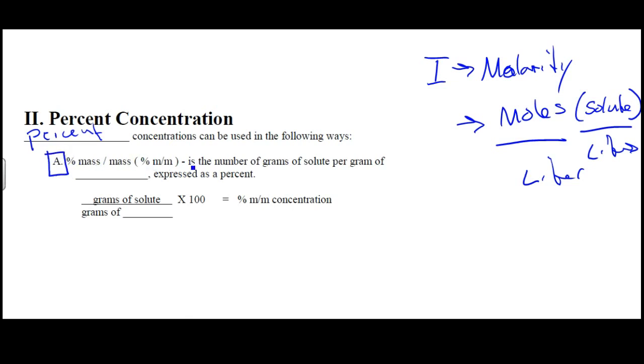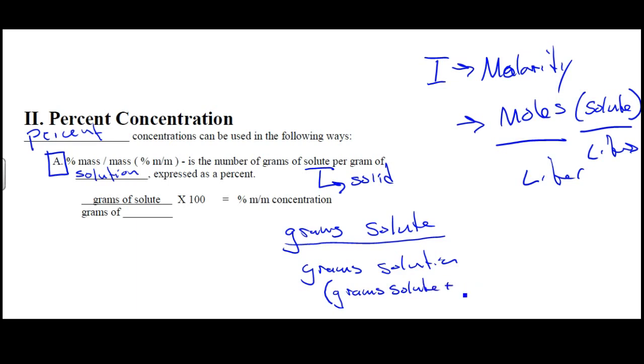The percent mass over mass is the number of grams of solute. So once again, that's my solid. All right. So I would have grams of solute over grams of solution. Now, remember, if it's the solution, the grams of solution would be equal to the grams solute plus grams solvent.